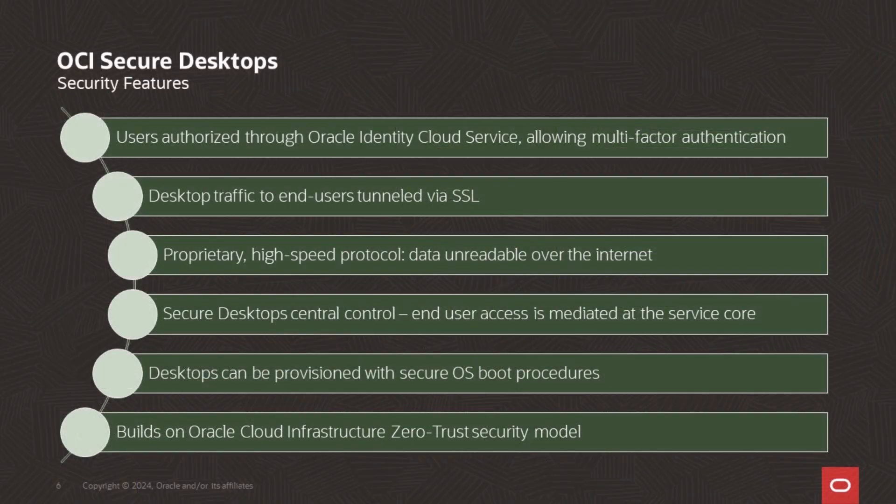Here are some of the unique security features for Desktop-as-a-Service using OCI Secure Desktops. The desktop end users are authorized through Oracle Identity Cloud Service, providing options for multi-factor authentication. All desktop traffic to end users is tunneled via SSL, keeping screen data — which are essentially pixels — unreadable over the internet. OCI Secure Desktops uses a proprietary high-speed protocol that does not expose access over the internet. It avoids identification of protocols with demonstrative vulnerabilities. There is no RDP over the internet with our implementation.